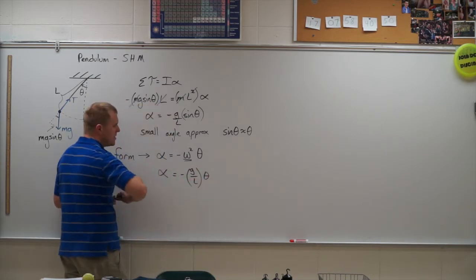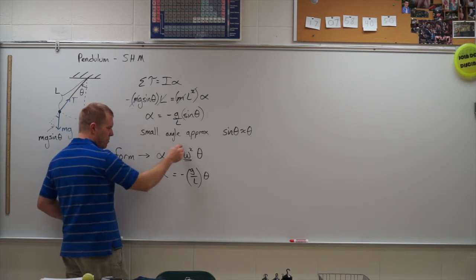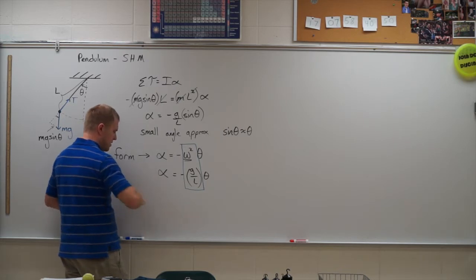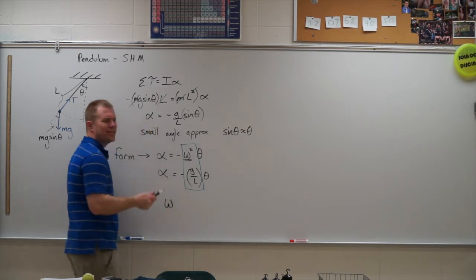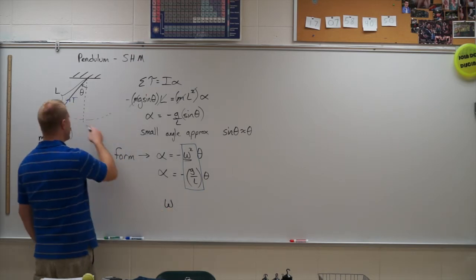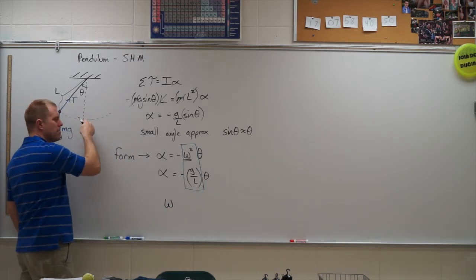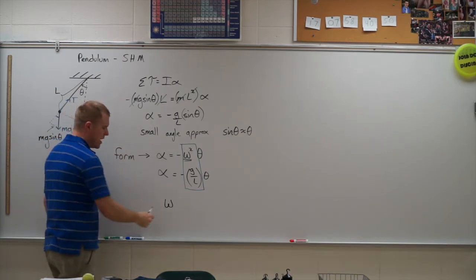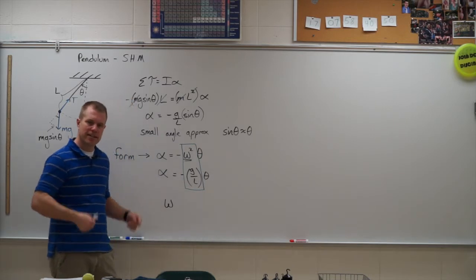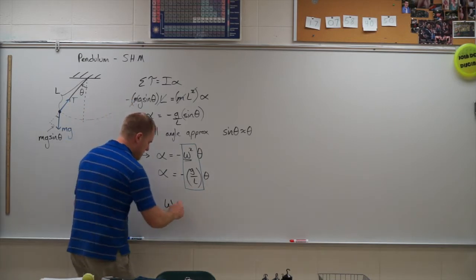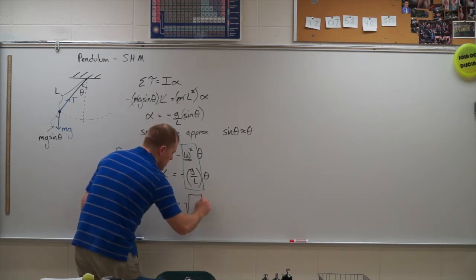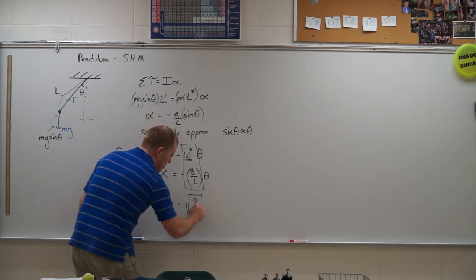So I get alpha is equal to negative g over L times theta. And so what we can pull from this is, in order to get it in this form, I kind of say, all right, I know what my angular frequency is going to be then. My angular frequency, and I want to stress this, angular frequency, this is not angular velocity. The angular velocity is changing, it's zero and then it's a maximum then it's zero, okay. This is the angular frequency, this is just like frequency, like five hertz or something like that, it's a constant value. So the angular frequency here is going to be the square root of g over L.